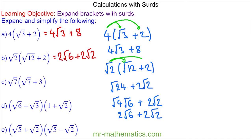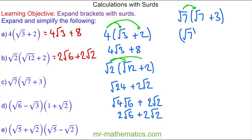Do you want to try and expand and simplify question C? You can pause the video and resume it when you're ready. So again we're going to multiply the outside term by each of the inside terms. We have root 7 squared, because we're multiplying it by itself, and then root 7 times 3, which is 3 root 7.